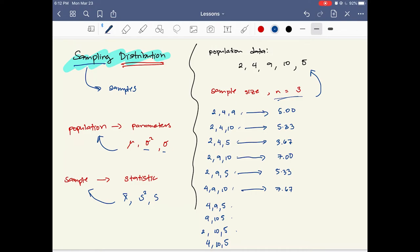And 2, 9, 5 is 5.33. For 4, 9, 10, let's add them, 7.67. For 4, 9, 5, its average is 6. For 9, 10, and 5, the average is 8. For 2, 10, 5, the average is 5.67. And for 4, 10, 5, it's 6.33. Now all of these are sample means.